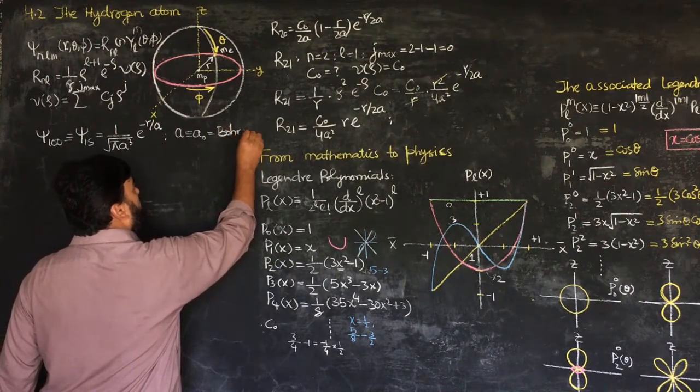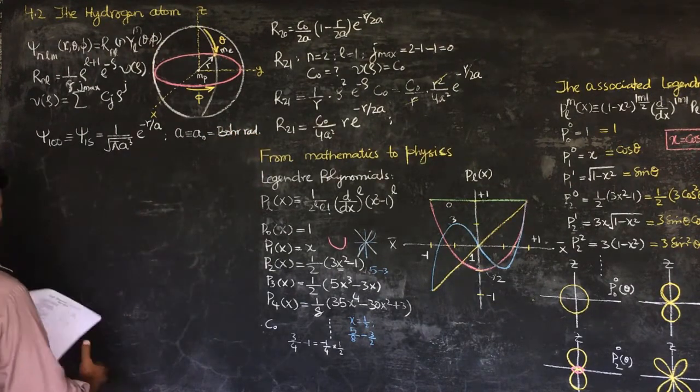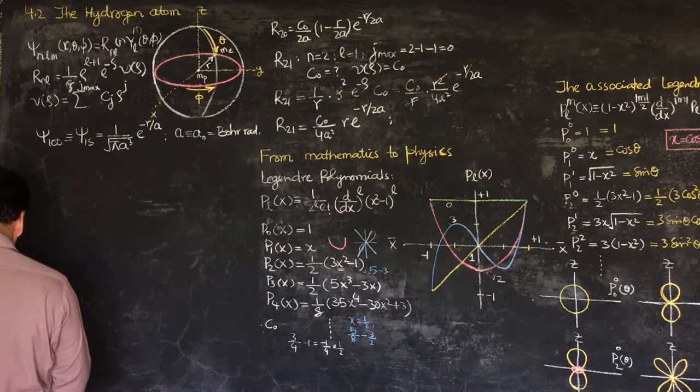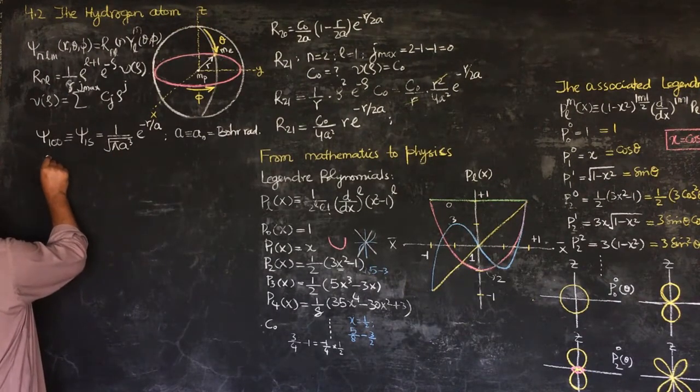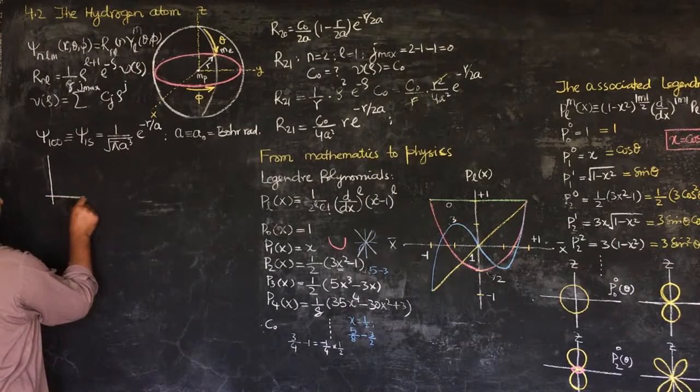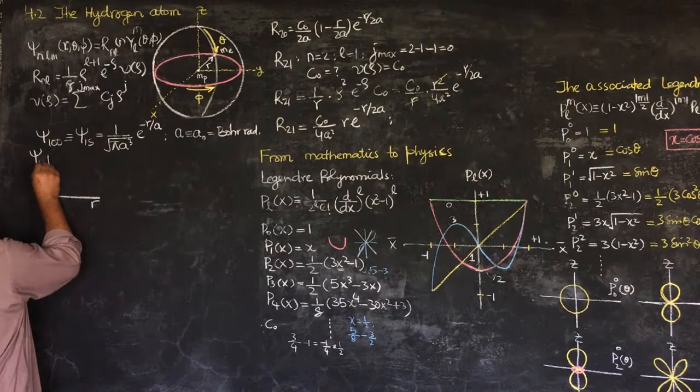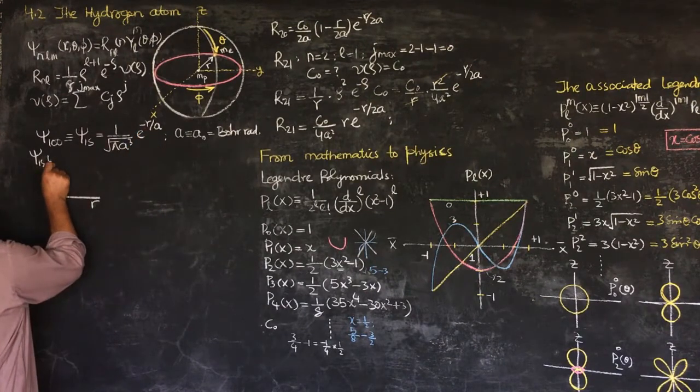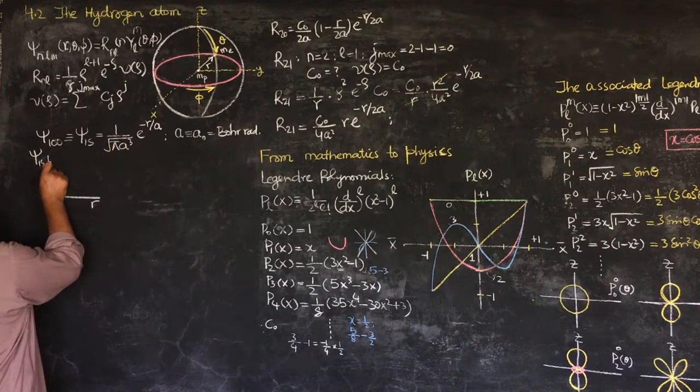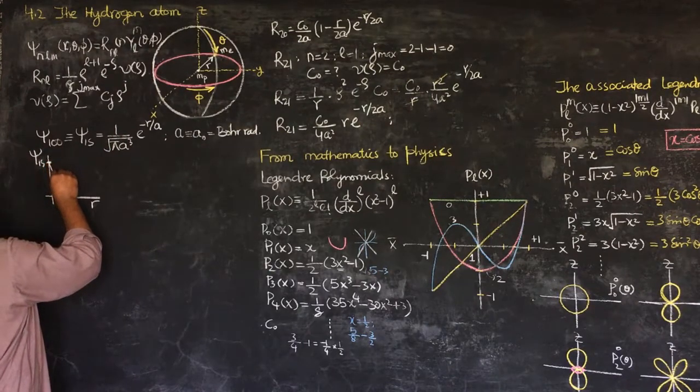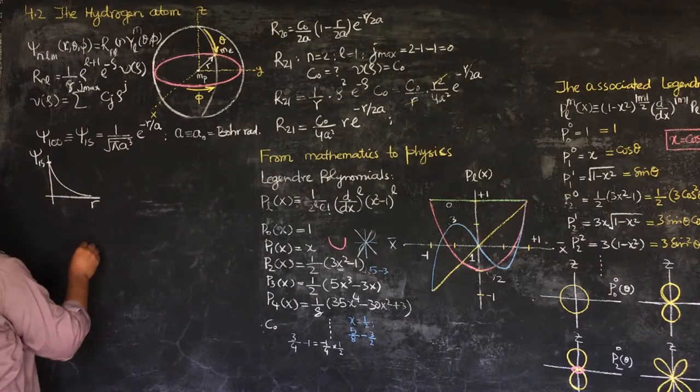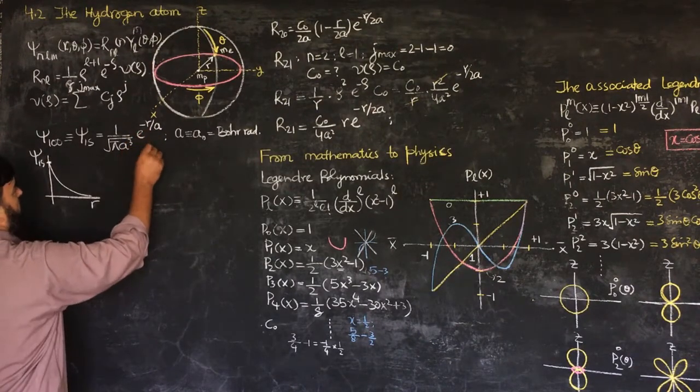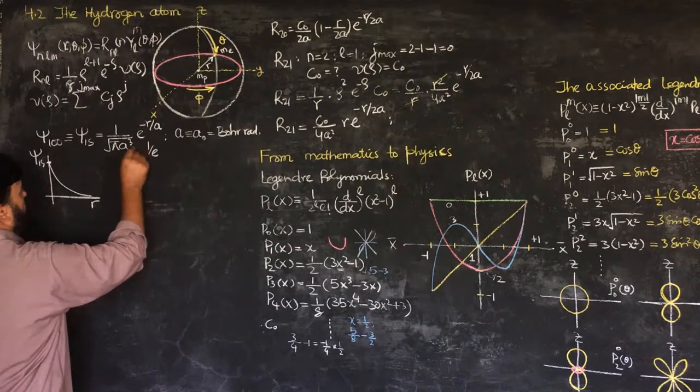If I plot this wave function, then it is like this. If I plot R on this axis and psi 1S on this, then it is an exponentially decaying function, setting the value of it 1 over pi A cube is here, then it is a decaying function and it goes like this. And if R equals A, when the radius becomes A, then it will be 1 over E times this value.